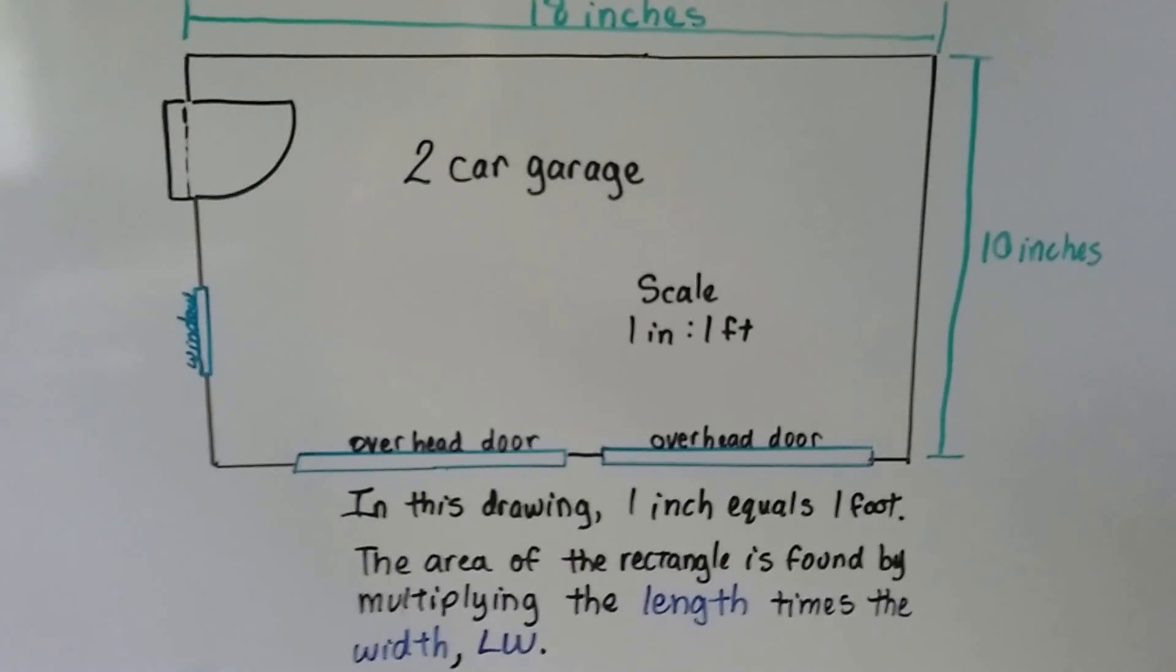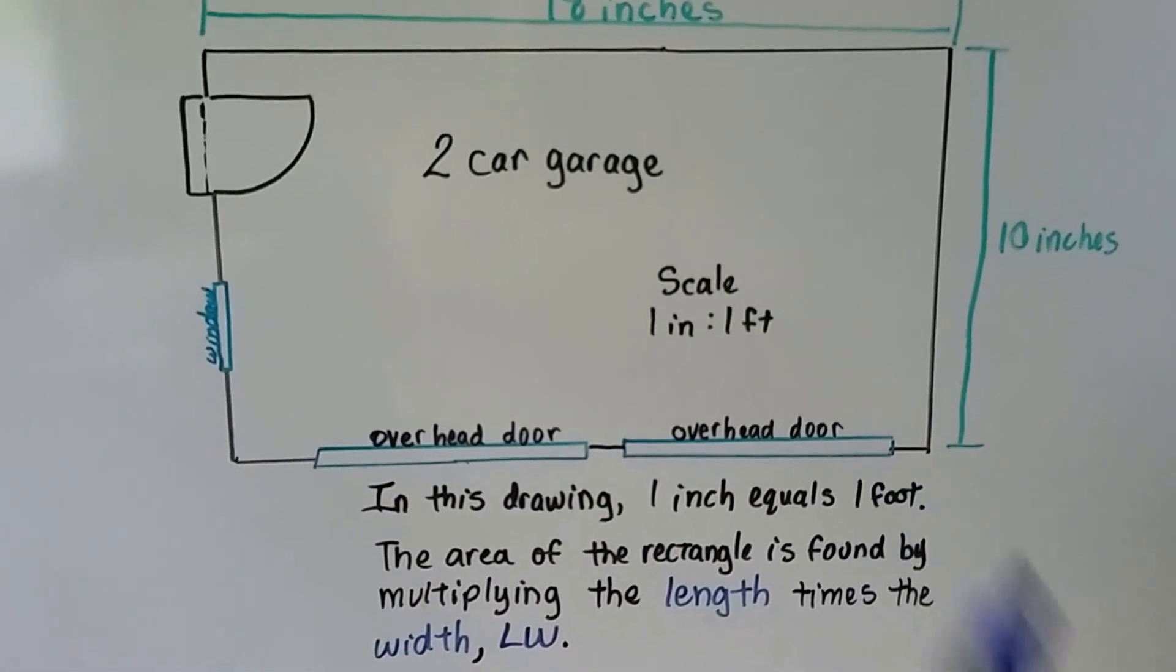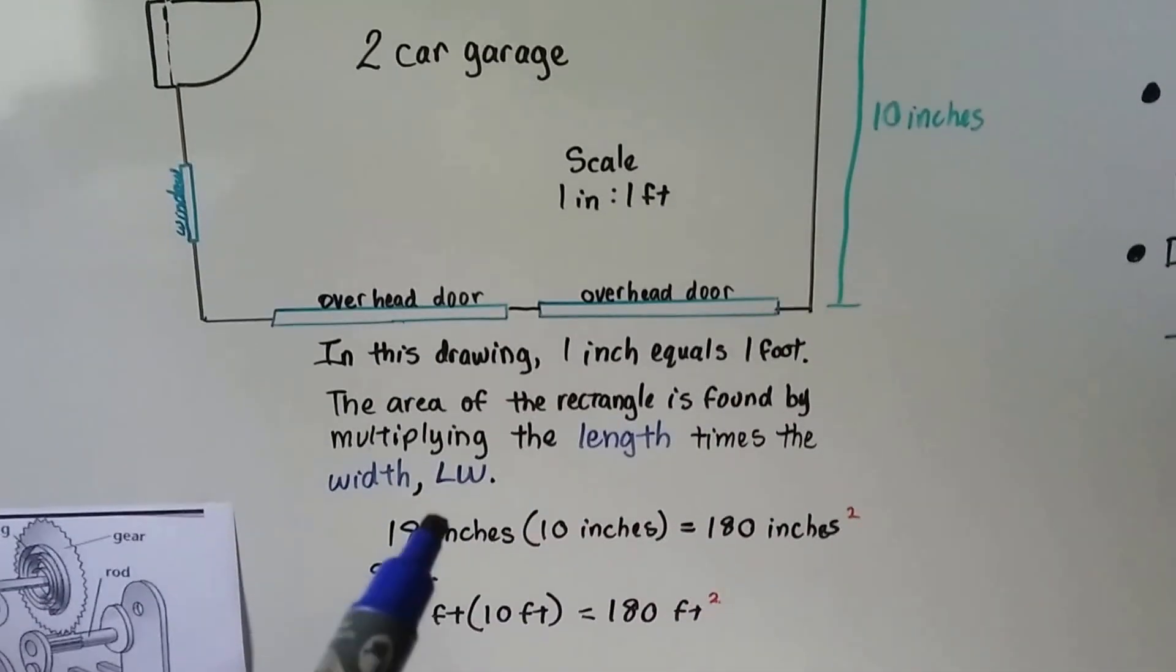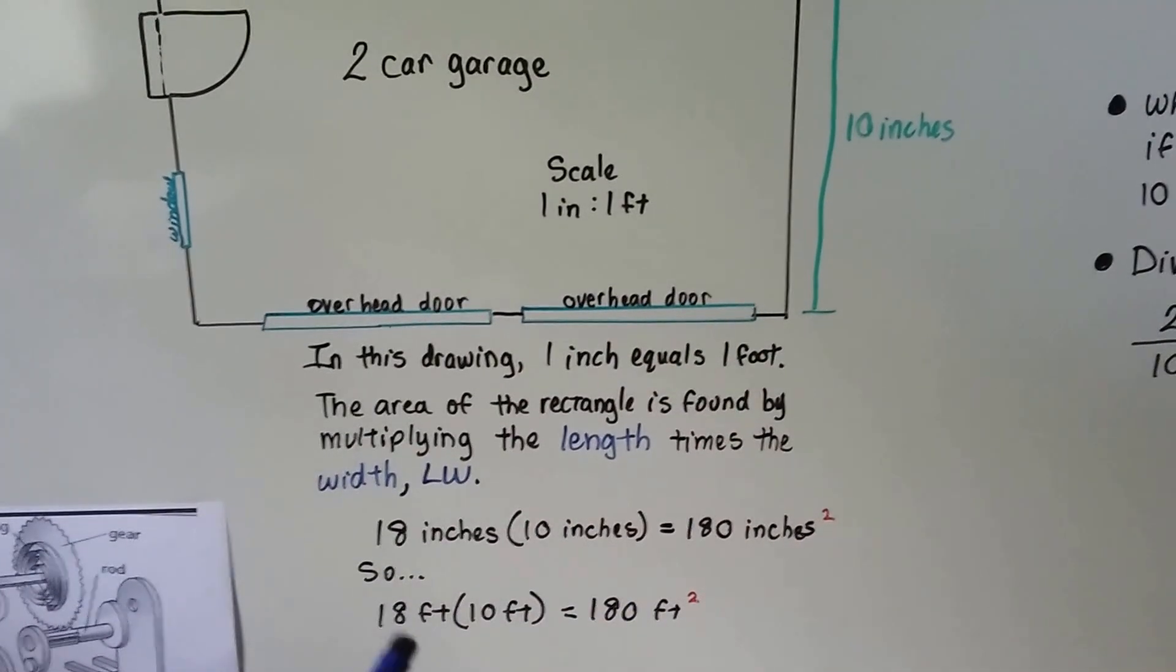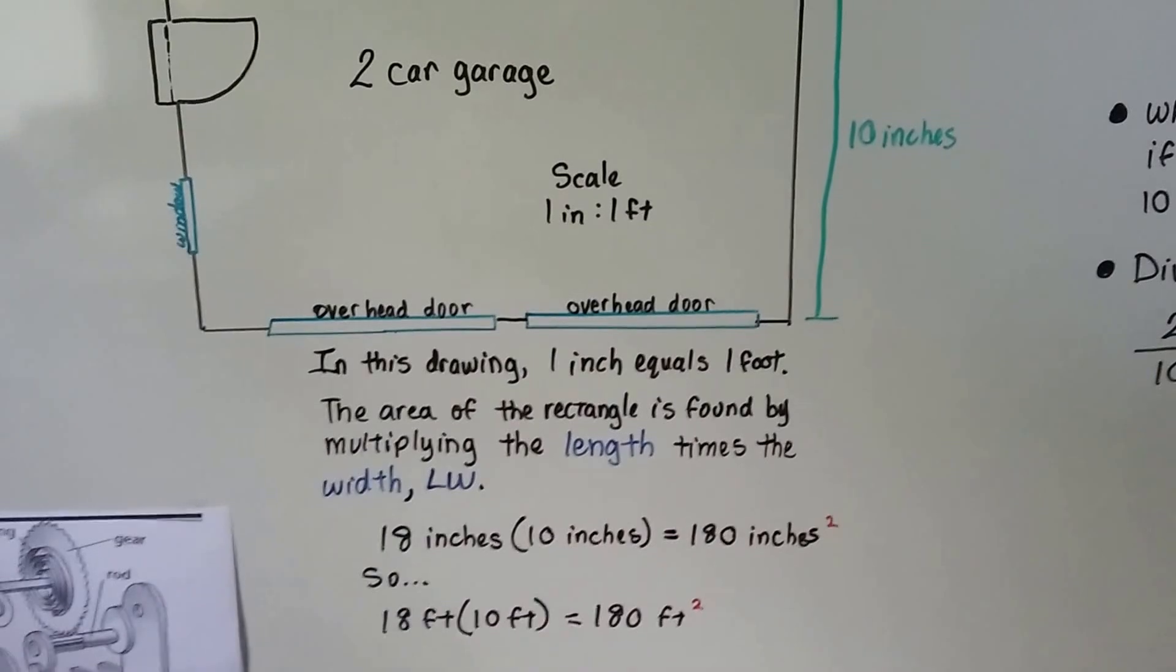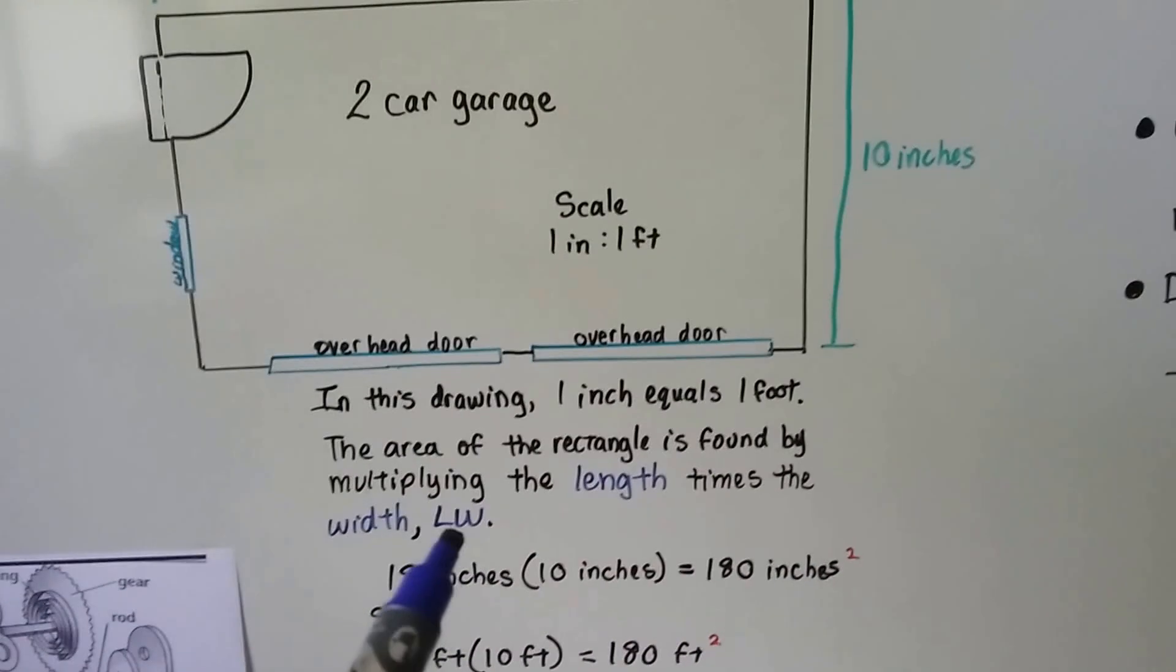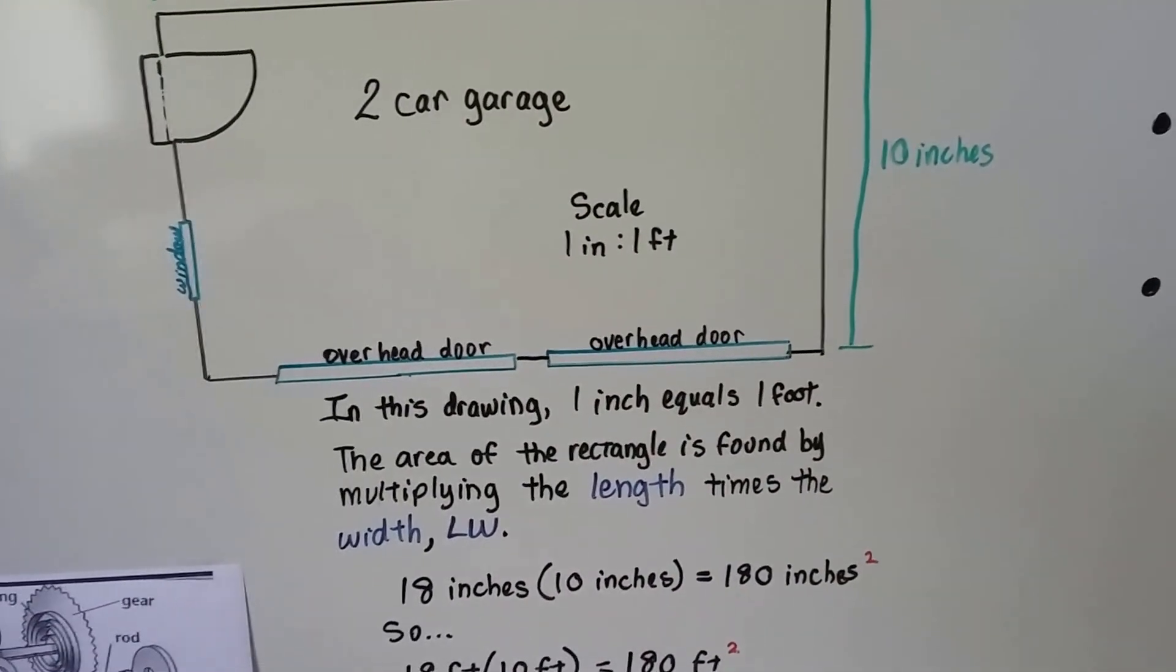And the area of the rectangle is found by multiplying the length times the width. So we would do 18 times 10. 18 inches times 10 inches is 180 inches squared. So that means 18 feet by 10 feet would be 180 feet squared, because it's inches to feet. Remember when you see the L and W next to each other, that means you're multiplying length times width.